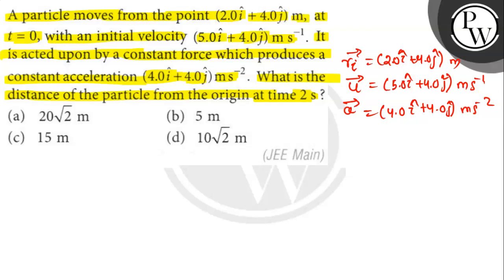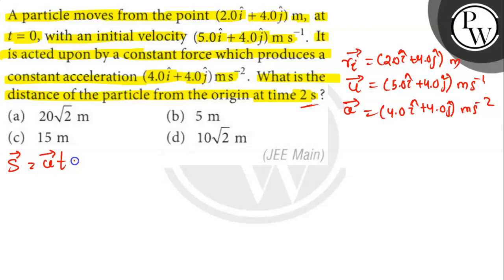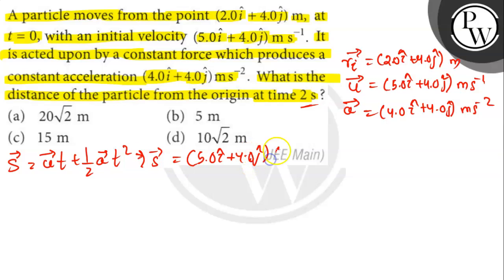We are supposed to find the distance of the particle from the origin at time 2 seconds. Let rf be the position vector of the particle at time t equals 2 seconds. We find the displacement vector from the initial position at t equals 0 to t equals 2 seconds. Newton's equation of motion in vector form is given by s vector equals u vector into t plus half a vector t square. That is s vector equals (5 i cap plus 4 j cap) into 2 plus half into (4 i cap plus 4 j cap) into 2 square.